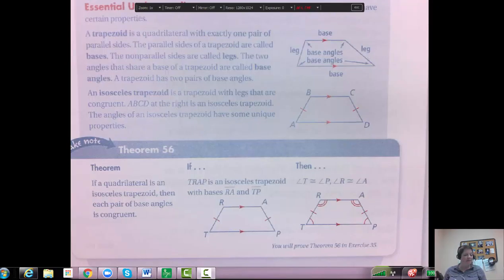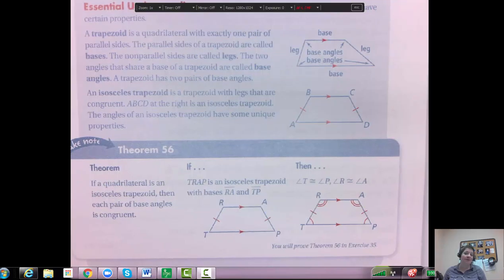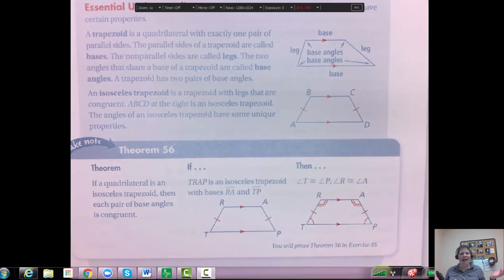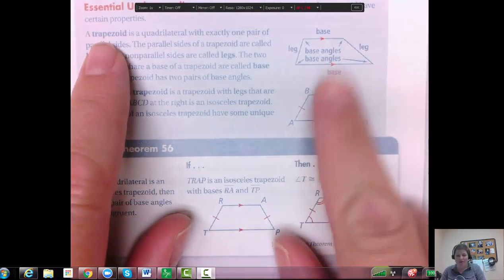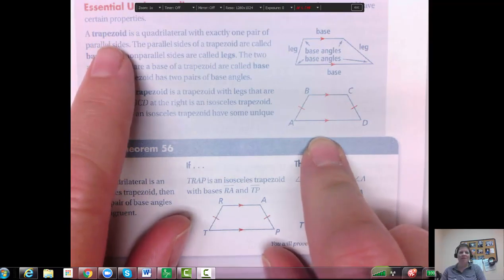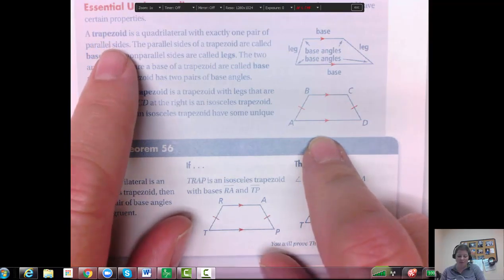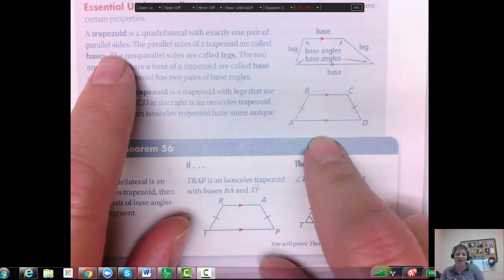All right, this video is going to help with 14.6, which covers trapezoids and kites. These are actually our last quadrilaterals. You can see the book definition here for the trapezoid, and here's a basic picture of some of them. A trapezoid is a quadrilateral, so it has four sides with exactly one pair parallel.